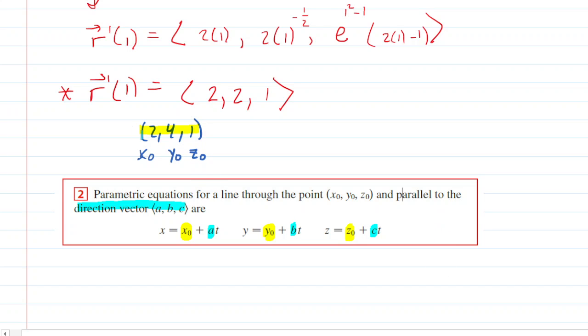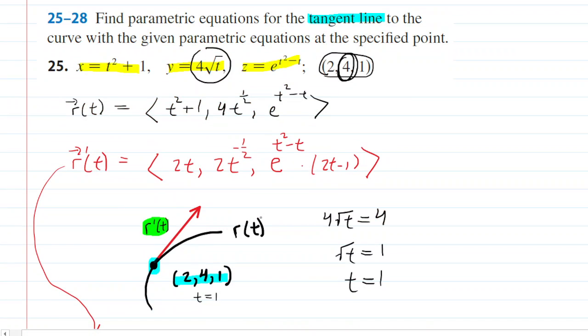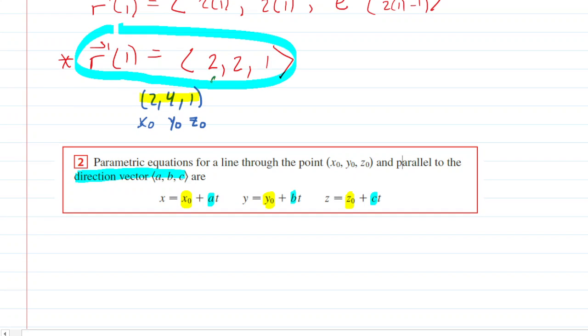Now, we already have that. We have the tangent vector right here that we calculated. That tangent vector is the direction vector of this line. So if you go back and look at that picture, that simplistic version right here, the direction of that tangent vector right there would be the direction vector of the line. So in other words, the line is traveling in the same direction as that tangent vector. And so we can just take this vector and plug in 2 for a, 2 for b, and 2 for c.